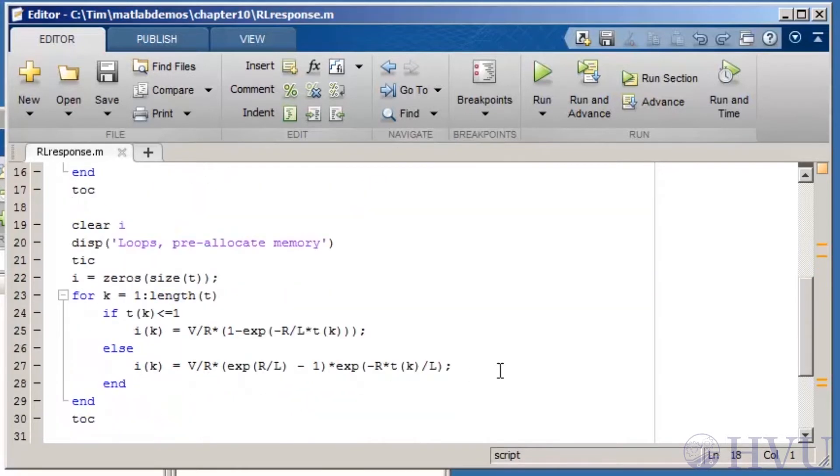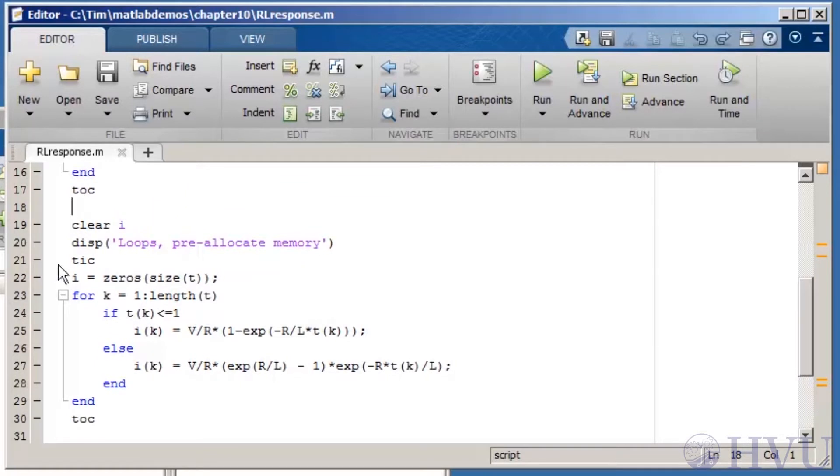The next approach is the same as the previous one, but I use the ZEROS command to pre-allocate memory for the current values before entering the loop. Again the TIC and TOC commands display the elapsed time. Notice that I clear the old values for current before doing this, so that I can get a time estimate that's consistent with the first approach.